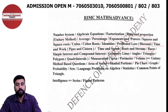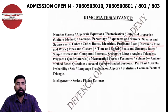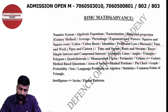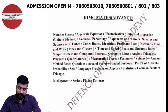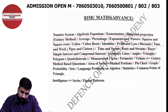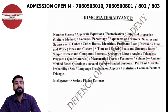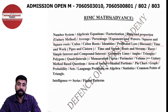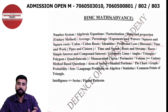Then we have mensuration — area, perimeter and volume. Coming back to polygons: area of triangle, area of quadrilaterals, trapezium, rhombus, square, rectangle, parallelogram — all are important, and their perimeters also come. Then volume. As I said earlier, unitary method covers 20% of the syllabus, and if you look at these questions, definitely at the end unitary method is used.